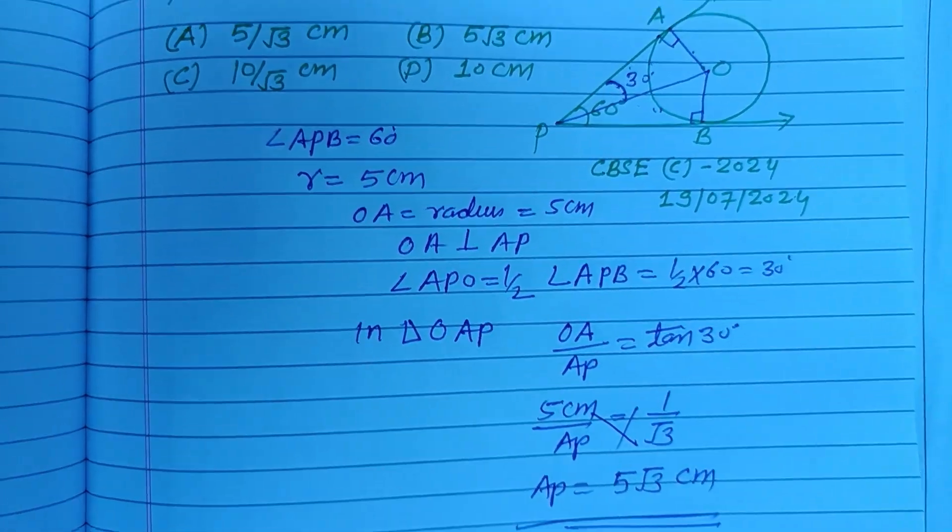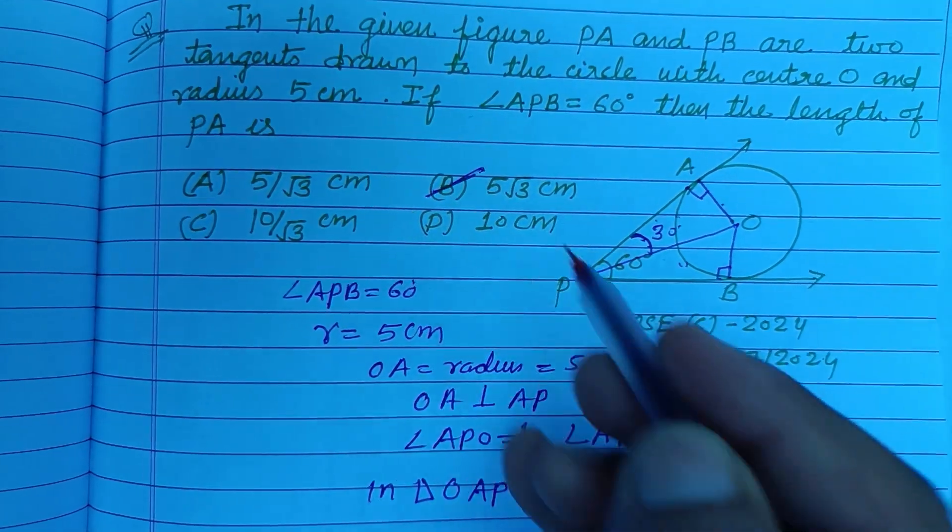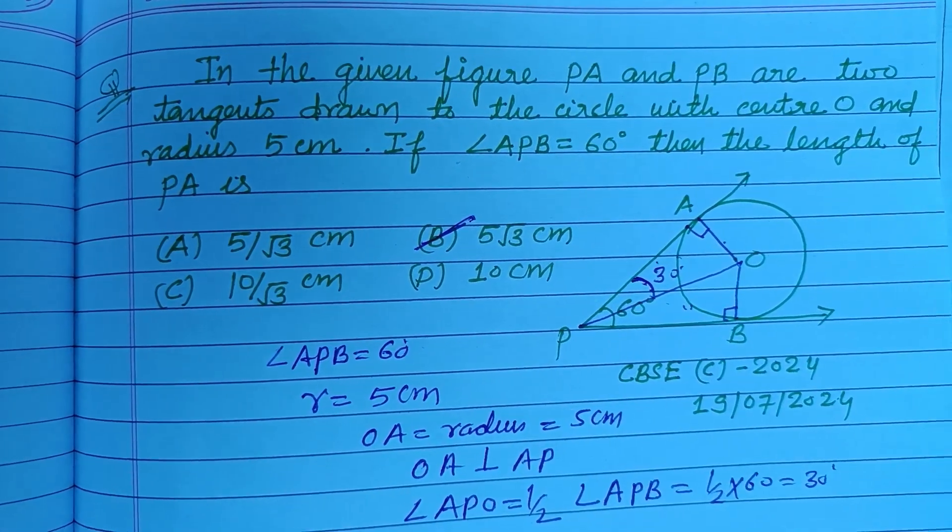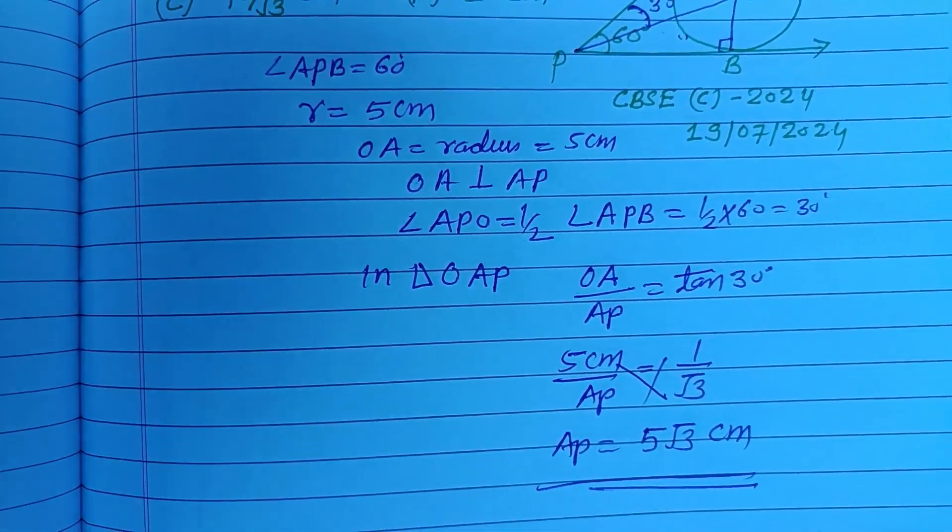So 5 root 3 cm is the correct answer which is found in option B. Option B is correct. I hope you got it, please like the video, subscribe the channel, thanks for watching.